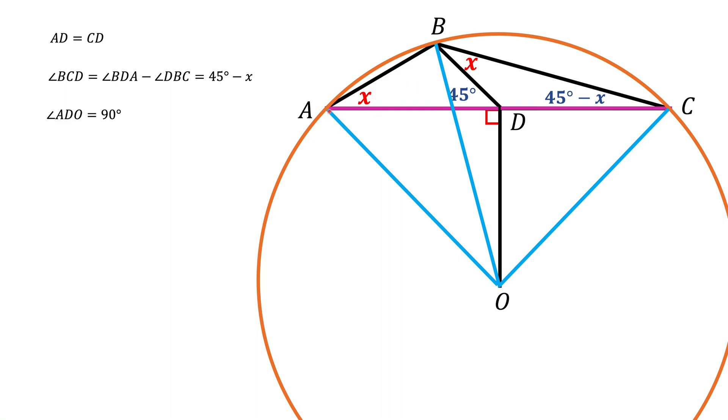Now notice that angle ACB is an inscribed angle. The vertex of this angle lays on a circle, and sides of this angle intersect the circle at the points A and B. Also there is something called a central angle, which also goes through points A and B but has a vertex at the center of the circle. It turns out that the central angle that is related to this inscribed angle, that central angle is twice as big as the inscribed angle.